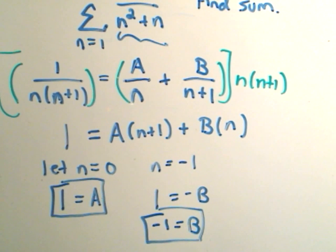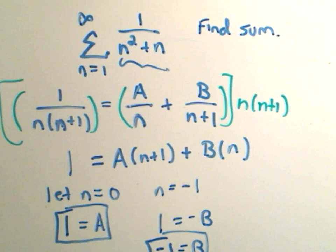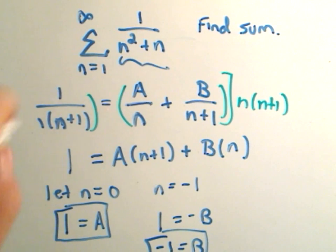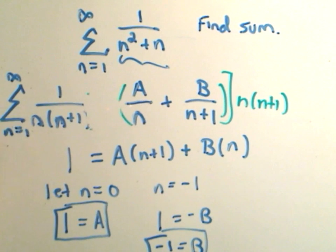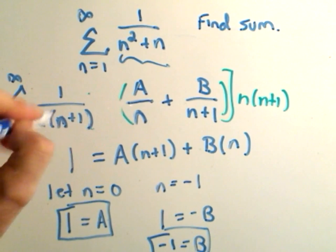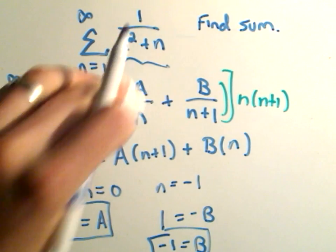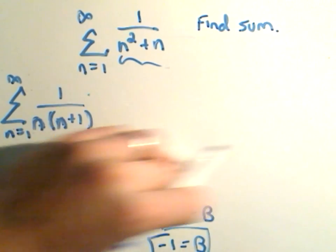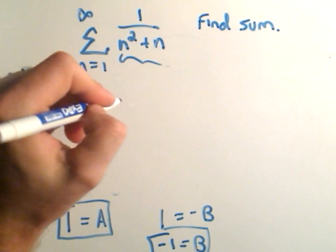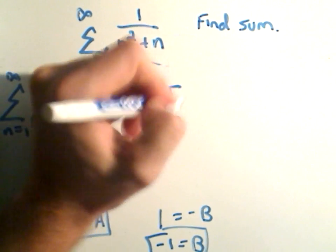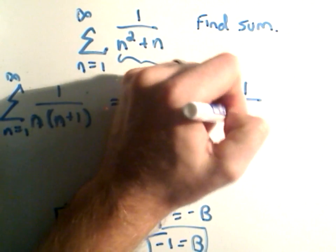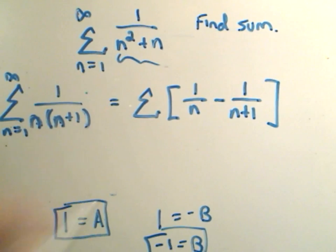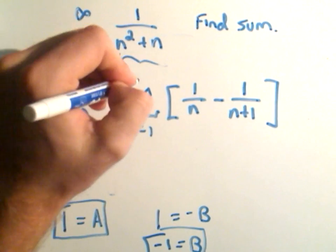Okay, so what I'm going to do is I'm going to plug these back into our series. So again, I could rewrite 1 over n squared plus n as the series 1 over n times n plus 1. And I'm going to plug in my A and my B. But it says we can really rewrite this as the series A over n plus B, which is negative 1, over n plus 1. We're calculating this from n equals 1 to infinity.